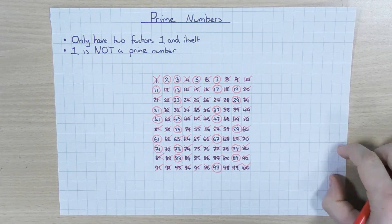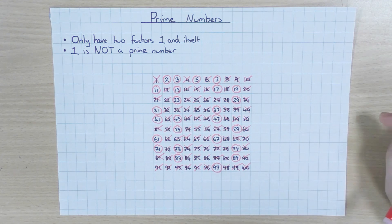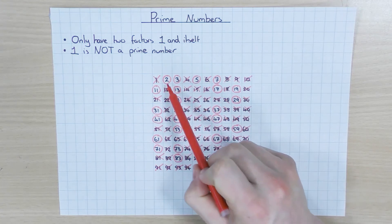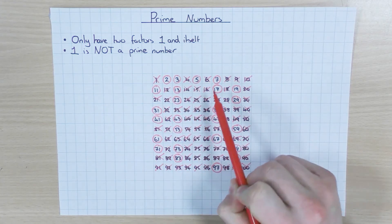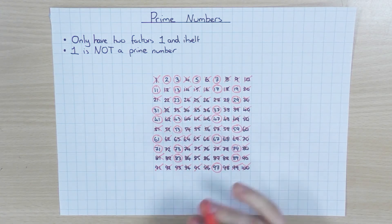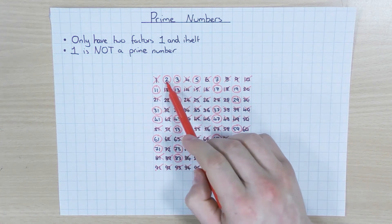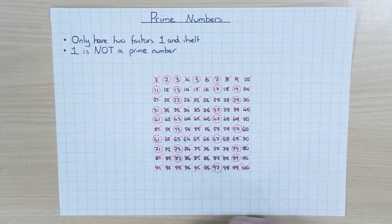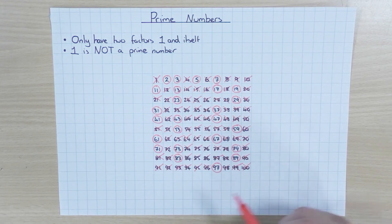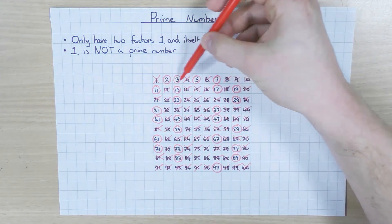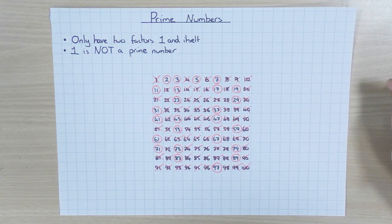So there are all the prime numbers between 1 and 100. So as you can see, if you're ever unsure if a number is prime — for numbers 1 to 100 — if 2 is a factor, 3 is a factor, 5 is a factor, or 7 is a factor, then it won't be prime. And if these numbers don't go into it, then it's probably going to be a prime number. So if you're ever unsure, check for those four numbers, and if they're not factors, you have got a prime number.